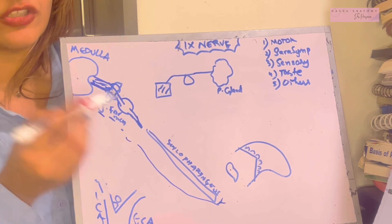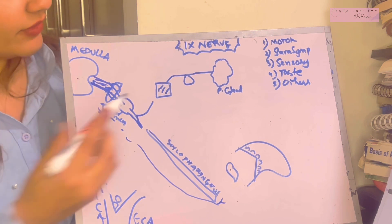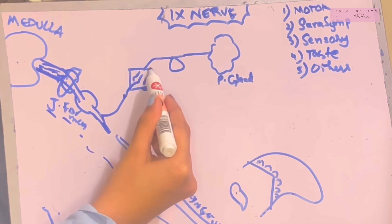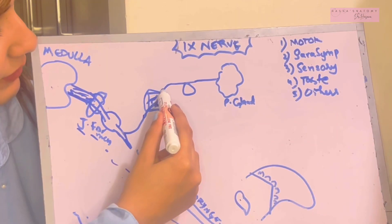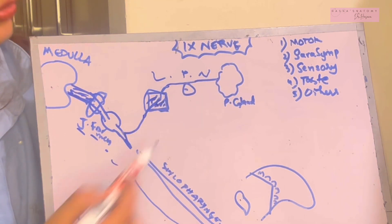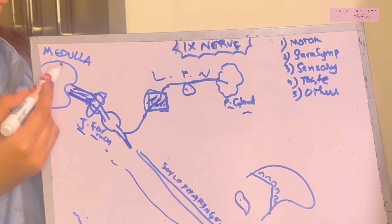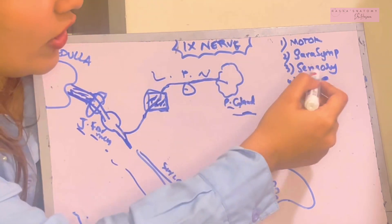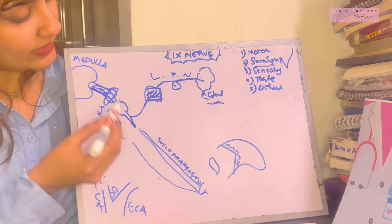The first branch is the tympanic branch, also known as Jacobson's nerve. It enters the middle ear cavity, where it forms the tympanic plexus. From the tympanic plexus arises the lesser petrosal nerve, which links to the otic ganglion. From the otic ganglion, via the auriculotemporal nerve, secretomotor fibers of the ninth nerve finally reach the parotid gland — completing the parasympathetic function.